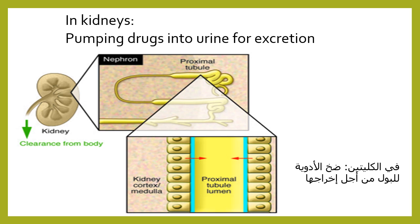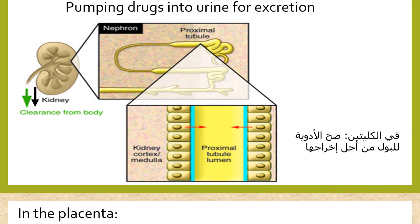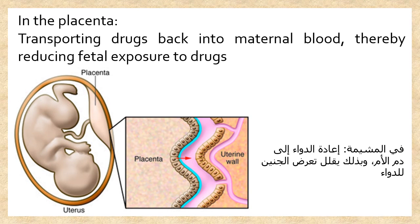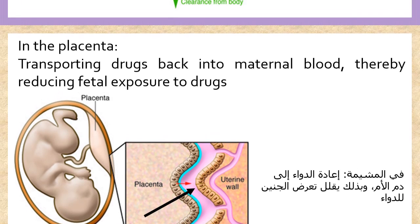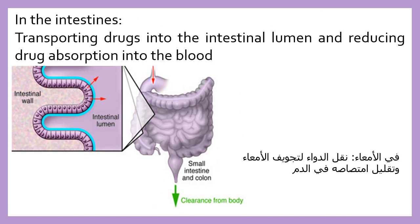In the kidneys, P-glycoprotein pumps drugs into urine for excretion. In the placenta, it transports drugs back into maternal blood, thereby reducing fetal exposure to drugs. In the intestines, it transports drugs into the intestinal lumen, reducing drug absorption into the blood.